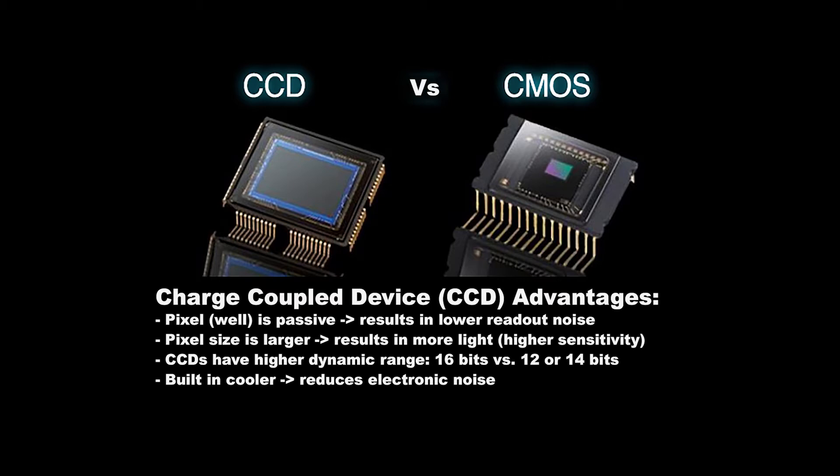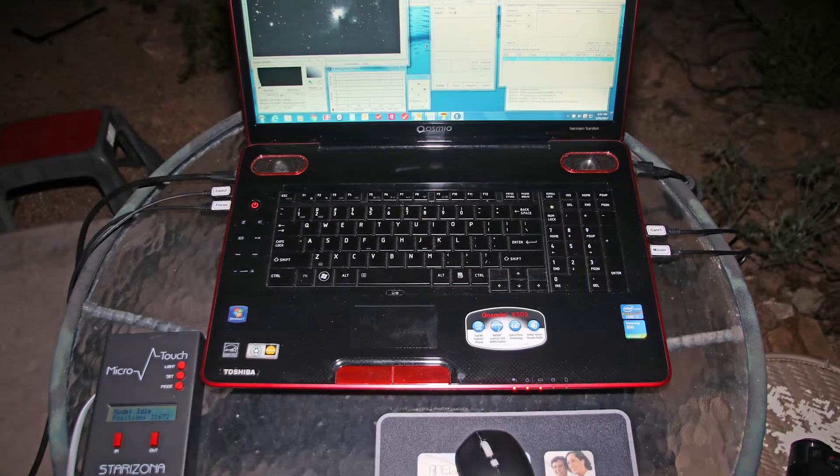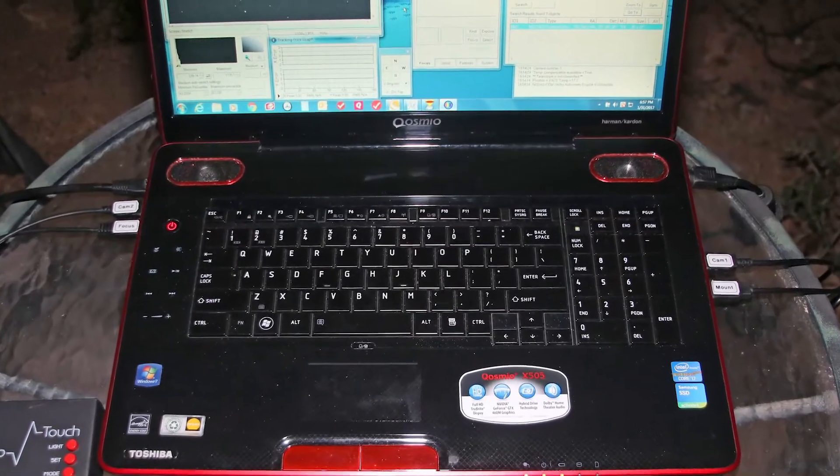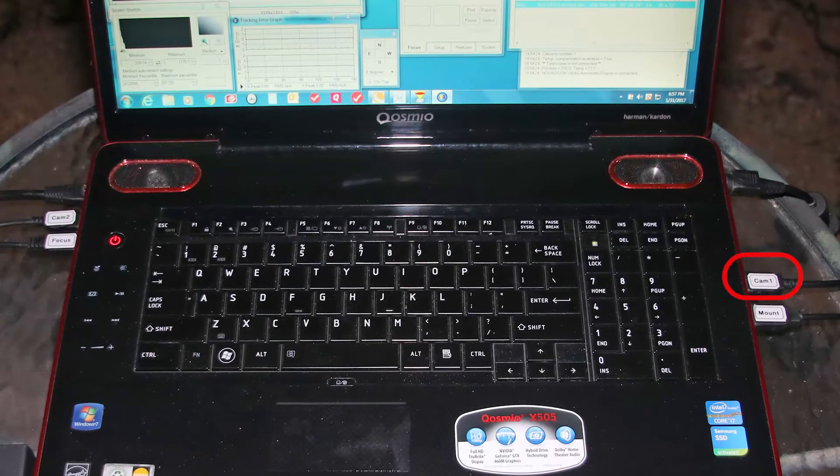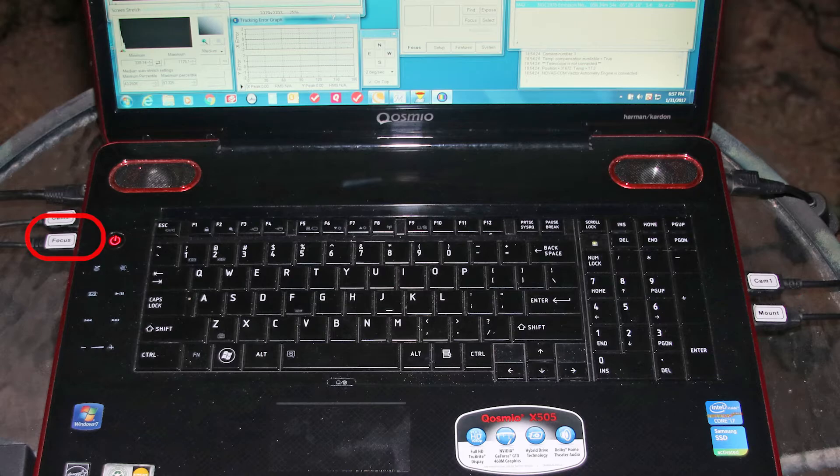This makes CCD sensors ideal for astrophotography. A local laptop is connected via USB ports to the main CCD camera, the guide scope CCD camera, the German Equatorial mount, and the autofocuser.